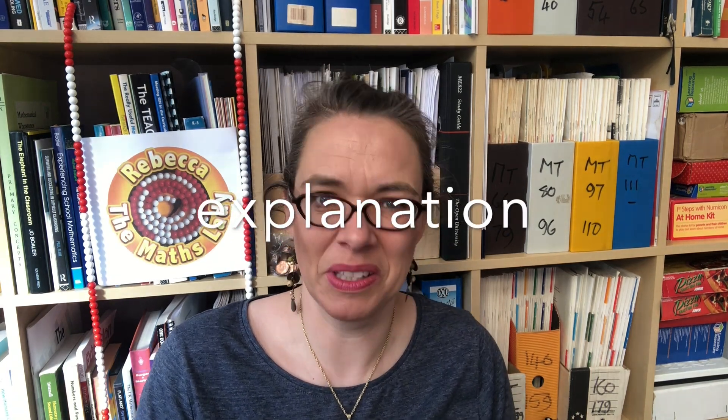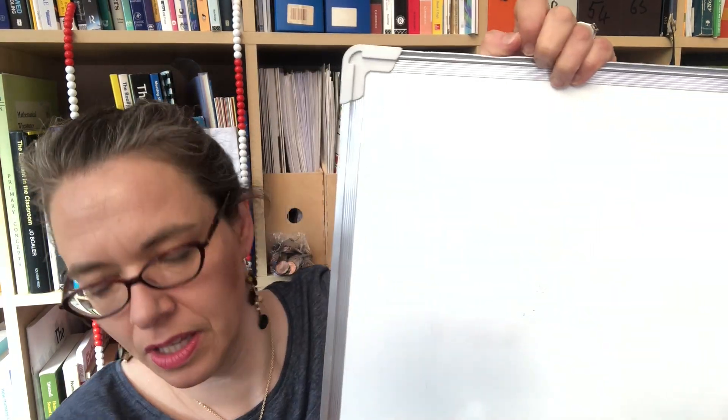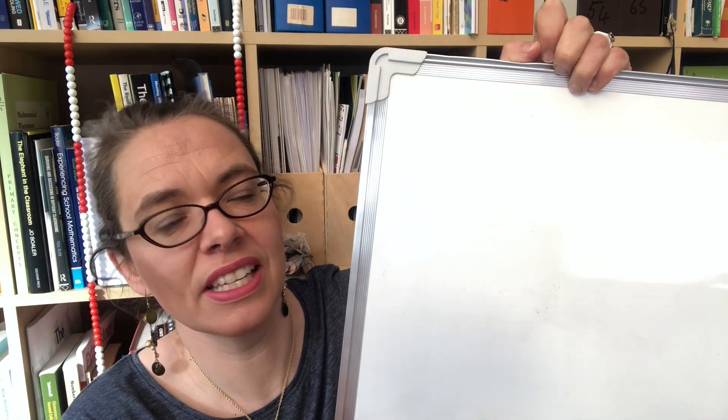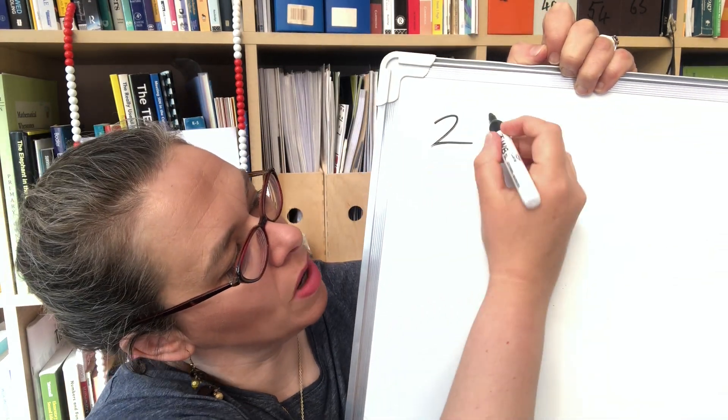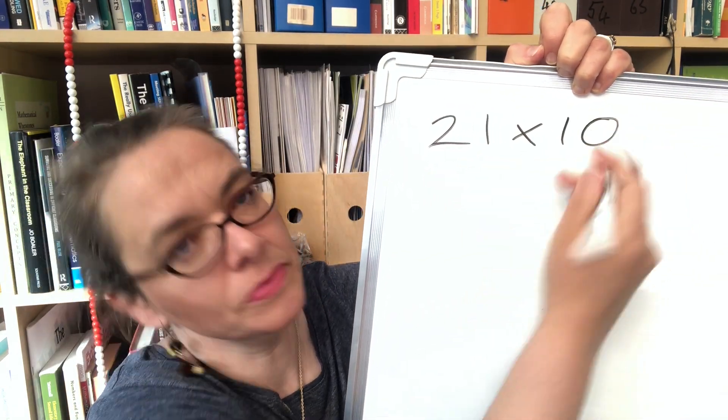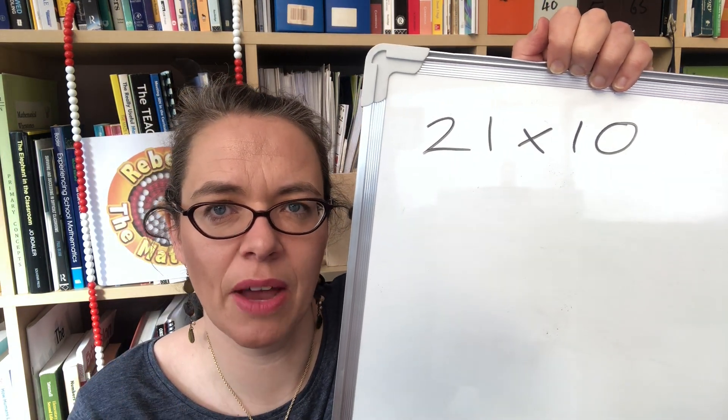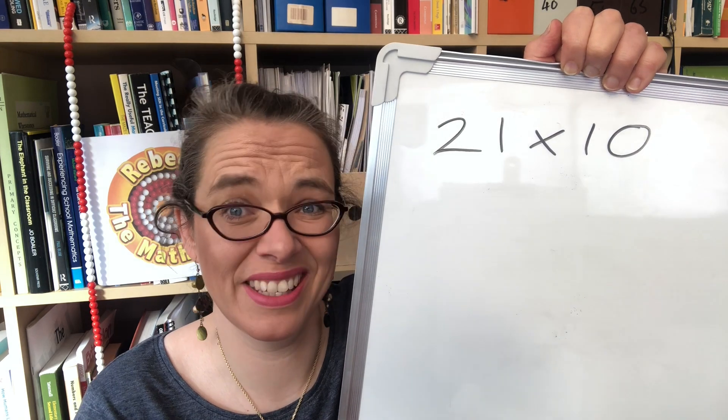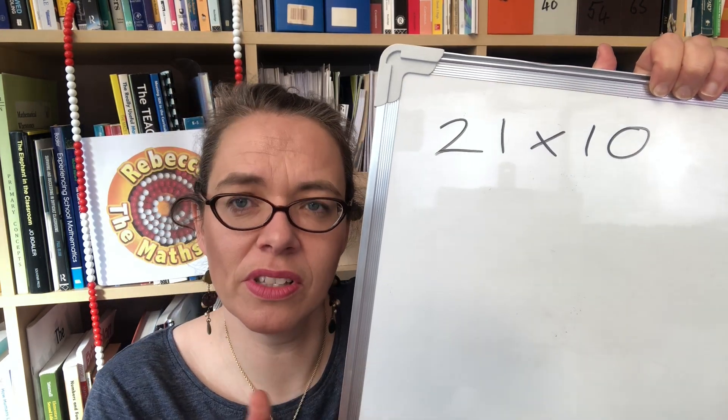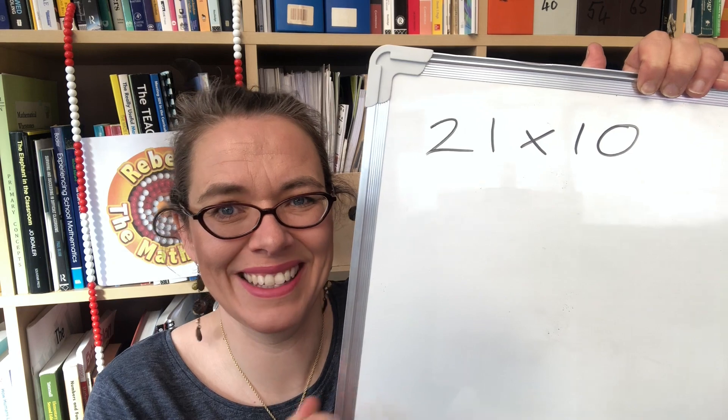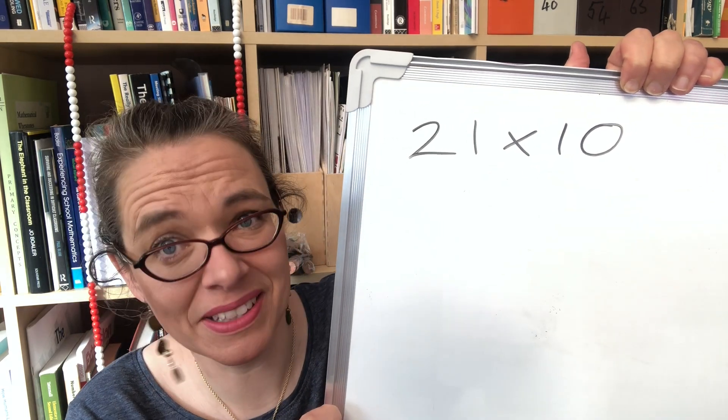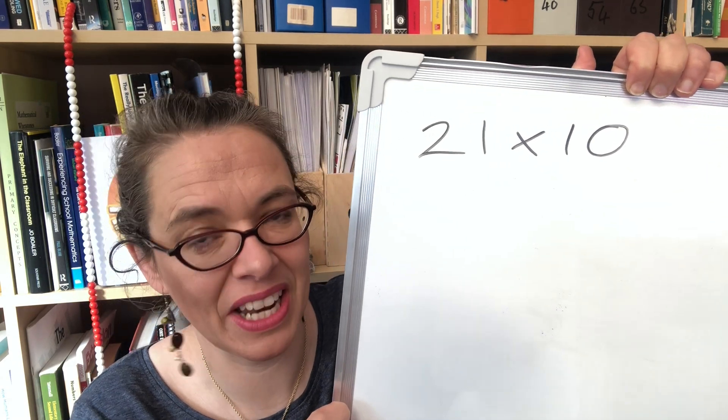Okay let's get started with multiplying by 10. So if we consider a calculation like 21 times 10 we can ask children to explore this in their own mind. It's really interesting to listen to their thought patterns but it's also helpful to establish how we're going to tackle this topic by building this number 21 with place value counters.